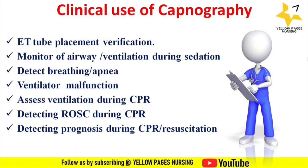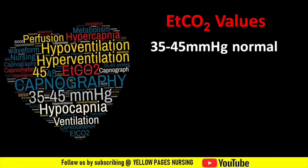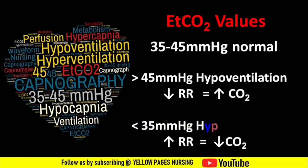Regarding EtCO2 values, 35 to 45 mmHg is the normal range. When it goes beyond 45 mmHg, it is called hypoventilation — respiratory rate decreases, which decreases gas exchange and thereby EtCO2 increases. When it goes below 35 mmHg, it is called hyperventilation — respiratory rate increases, increasing gas exchange and thereby EtCO2 decreases.